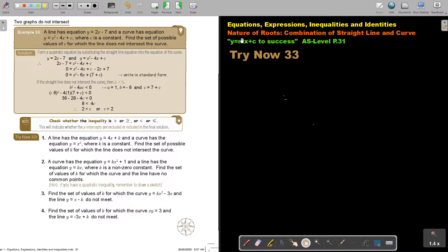In this video, we are going to continue with nature of roots, a combination of a straight line and a curve. You will find this on page 31 in the Namibia A-level mathematics textbook, Y equals MX plus C. Let's look at another example.